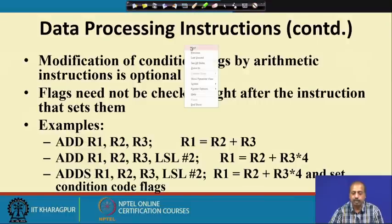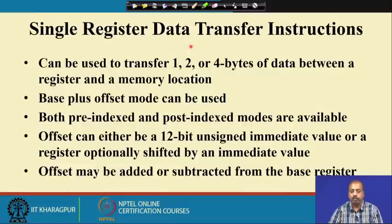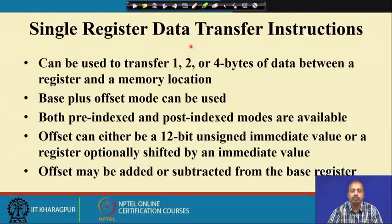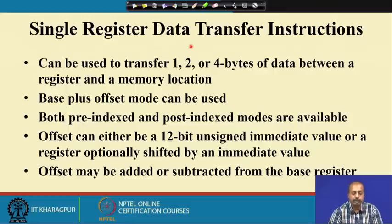These are the data processing instructions. Then we have the data transfer instructions. The first category transfers 1, 2, or 4 bytes of data between a register and a memory location. You can have 1-byte, 2-byte, or 4-byte data transfer; total word size is 32 bits. A base-plus-offset addressing mode can also be used, where you specify a base and an offset to compute the address.